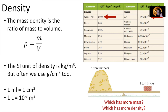Which weighs more — one ton of feathers or one ton of bricks? They both weigh the same. But which has the greater density? Density is mass per volume. Both have the same mass, but the one ton of bricks occupies a smaller volume. Same mass divided by a smaller volume gives a larger density — you have the same amount of mass compressed into a smaller space.